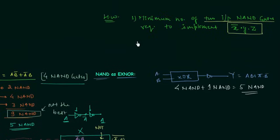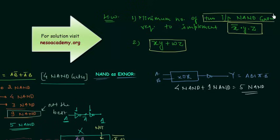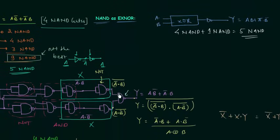In the second homework problem, you have to find the minimum number of 2-input NAND gates required to implement X and Y or W and Z. The number of NAND gates should be minimum. Just as with the XOR gate, where we can implement it using 9, 5, or 4 gates, the correct answer is always the minimum — in that case, 4 NAND gates.